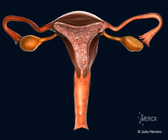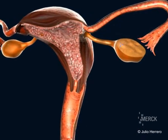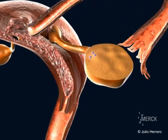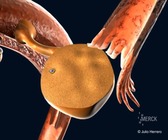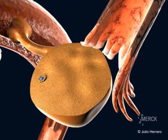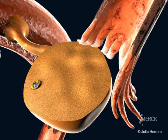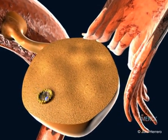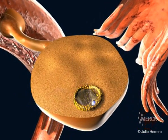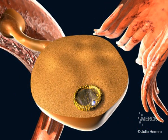At the start of the menstrual cycle, a cohort of follicles starts to grow, but generally only one continues to develop. This follicle is referred to as the dominant follicle. In its interior, the follicle contains an immature oocyte. This follicle increases in size by one to two millimeters per day.